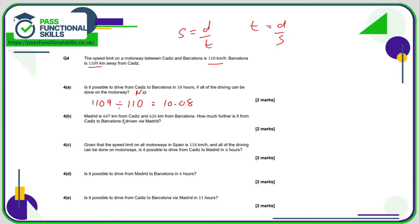Madrid is 647 kilometres from Cadiz and 626 from Barcelona, so how much further is it from Cadiz to Barcelona via Madrid? 647 plus 626 comes to 1,273, compared to 1,109 direct. The difference between them — subtracting one from the other — is 164 kilometres.